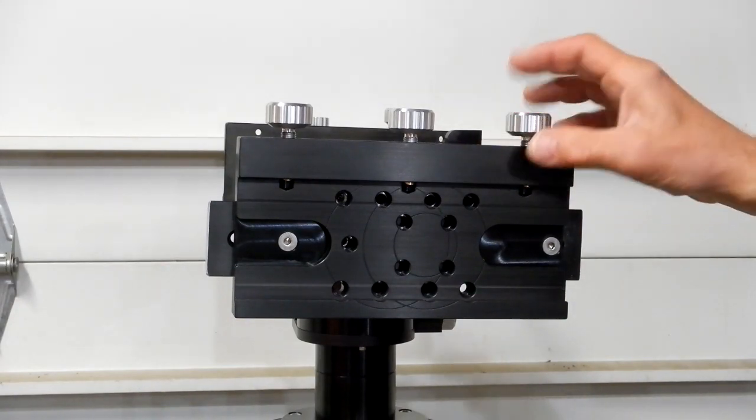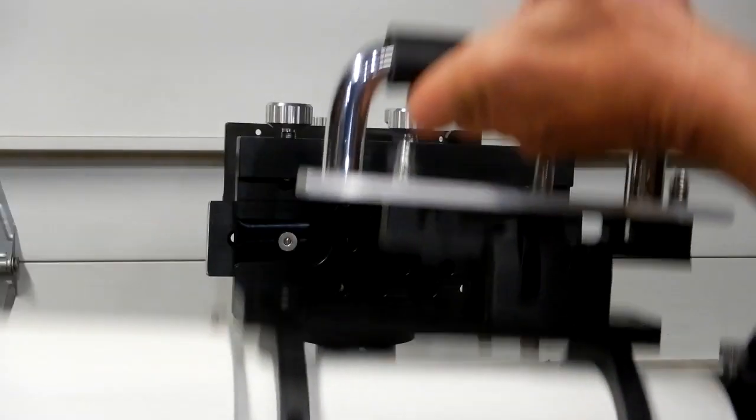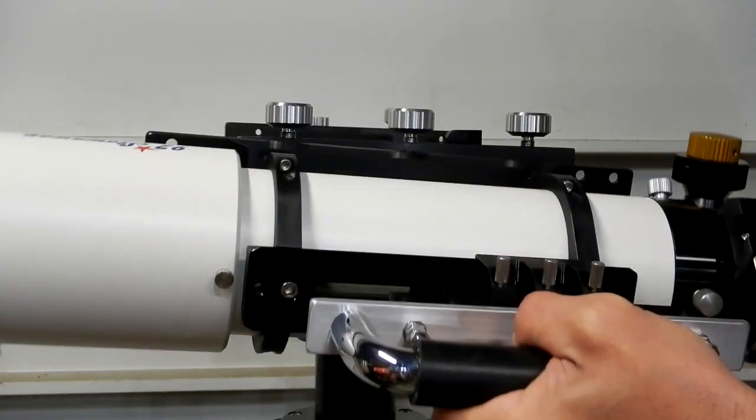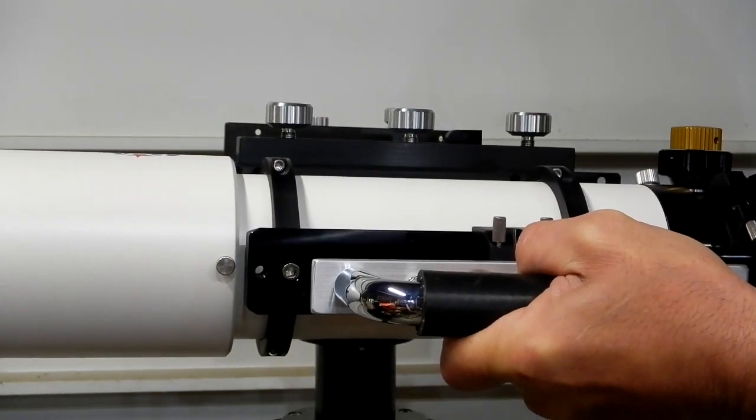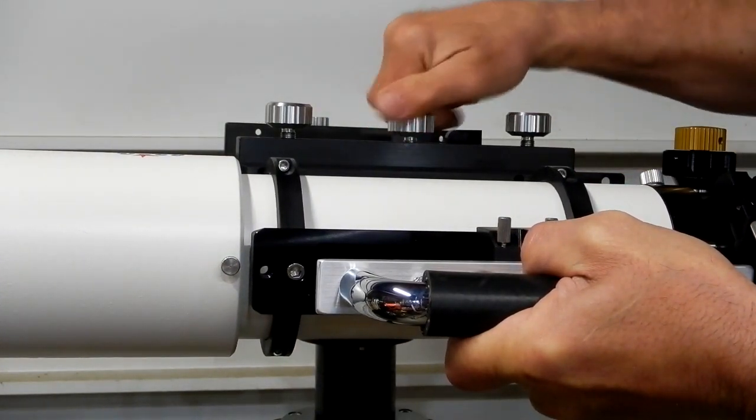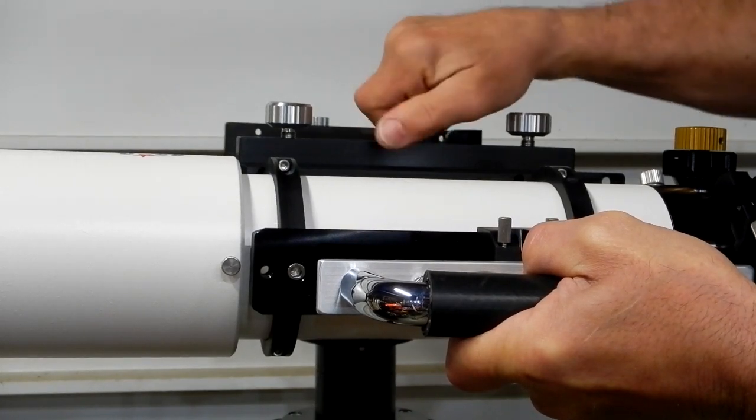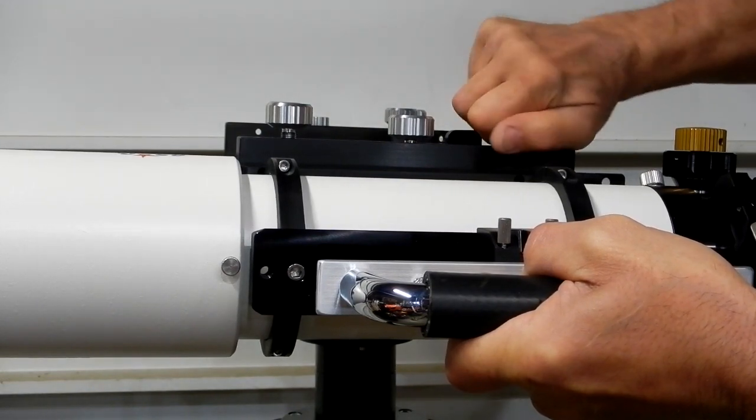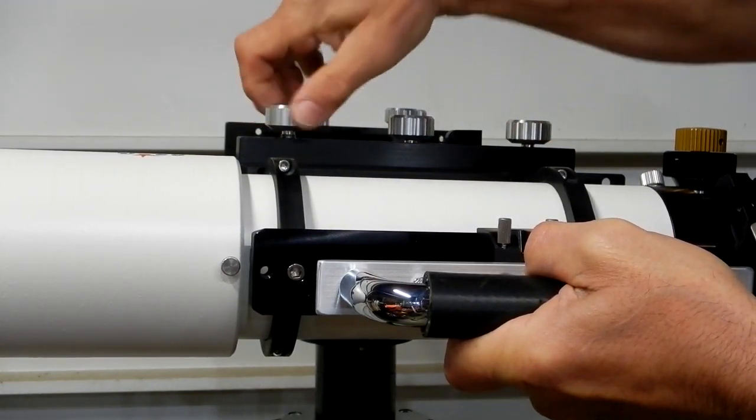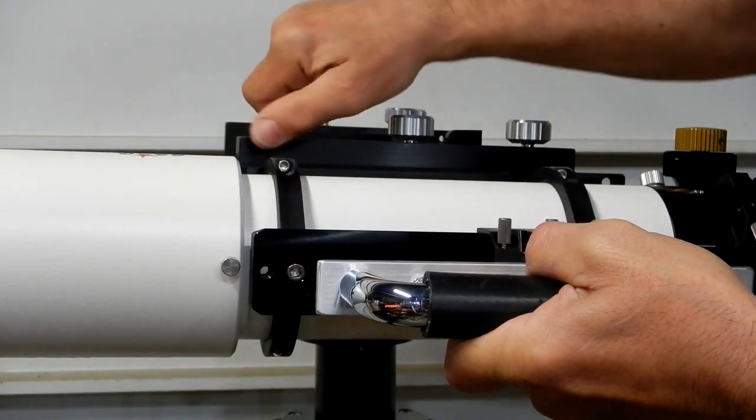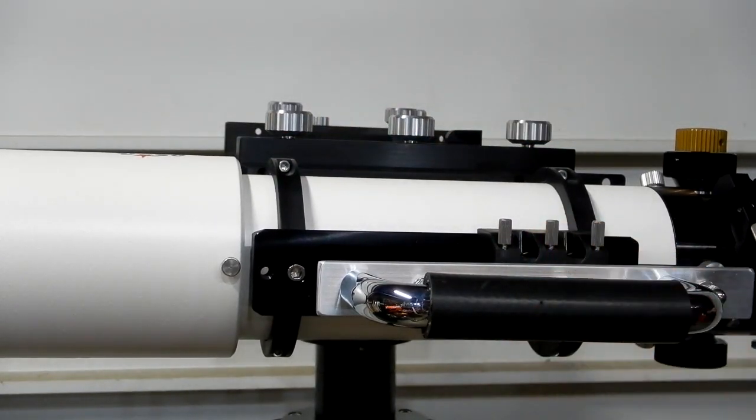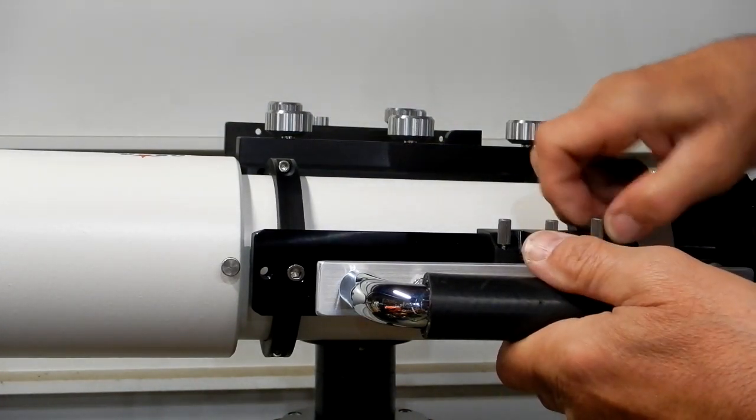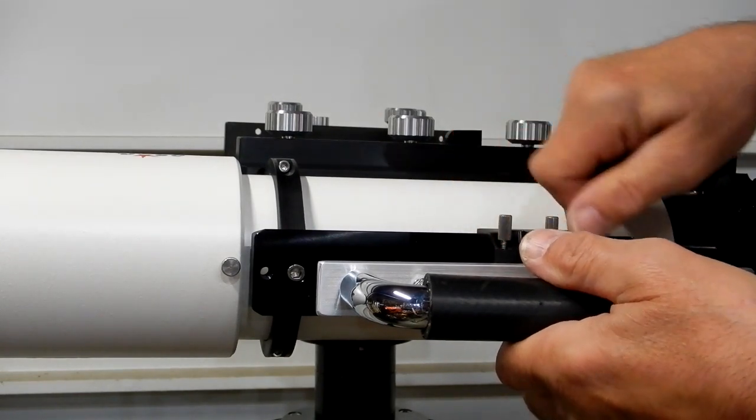So now whether it's an equatorial mount or something like this, you've got your scope, you can set it in the dovetail like that, position it where you need it, and make sure it's all secured like that when you're ready to observe.